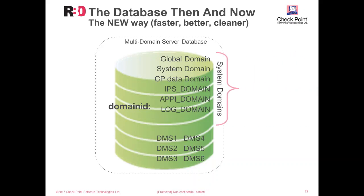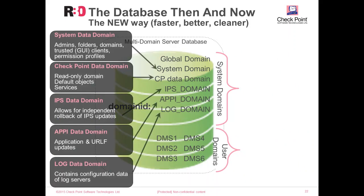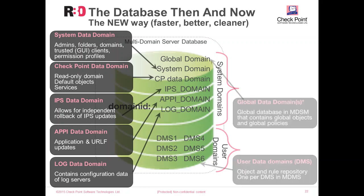We still have our system domains and user domains. The system domains contain the system data domain with admin folders, domains, trusted good clients, permission profiles, and so on. The checkpoint data domain is a read-only domain containing the default objects and services pre-populated by checkpoint. The IPS data domain contains IPS updates, similarly for the API domain, and the log data domain contains configuration data of the different log servers. The global data domain now contains global objects and global policies, and we have multiple user data domains — each equivalent to the old CMA.